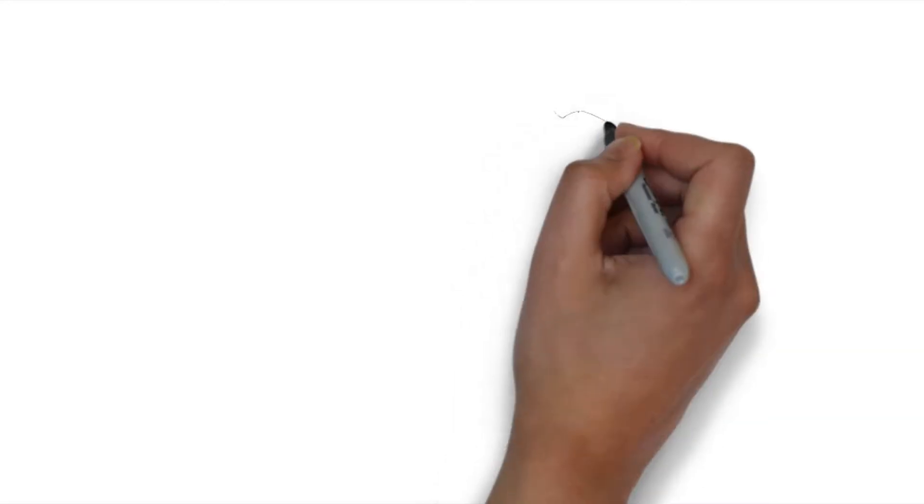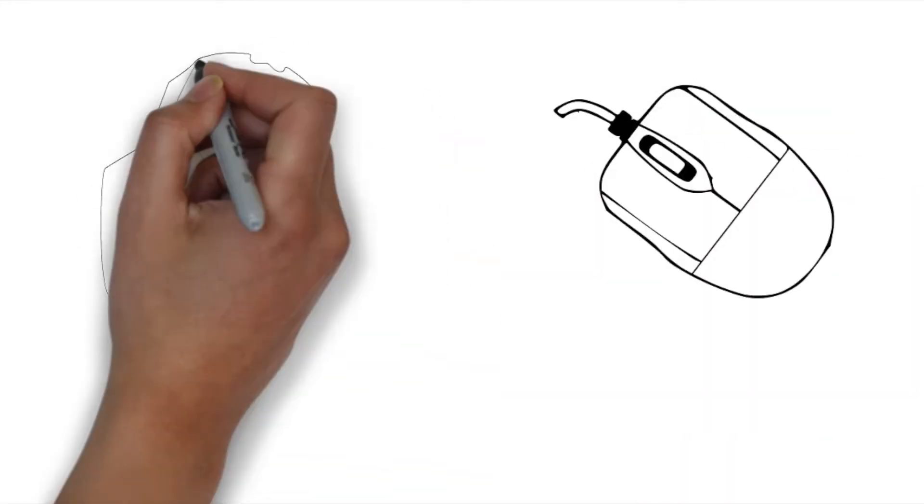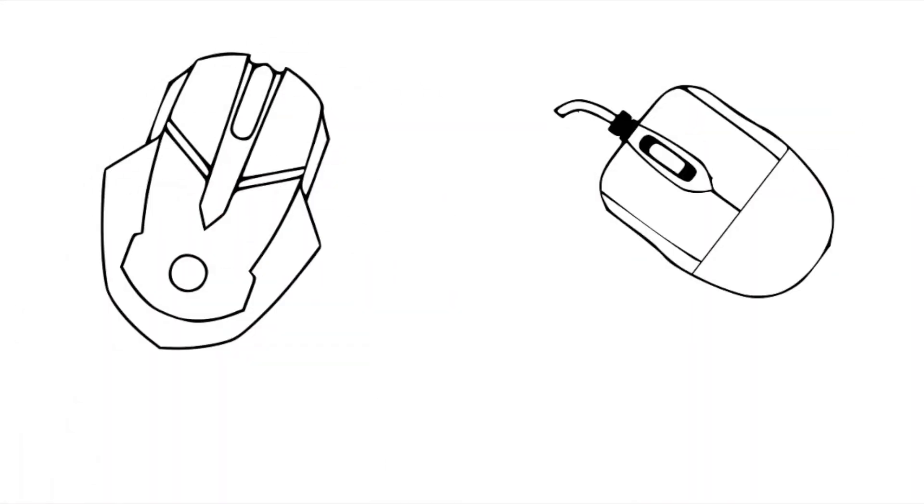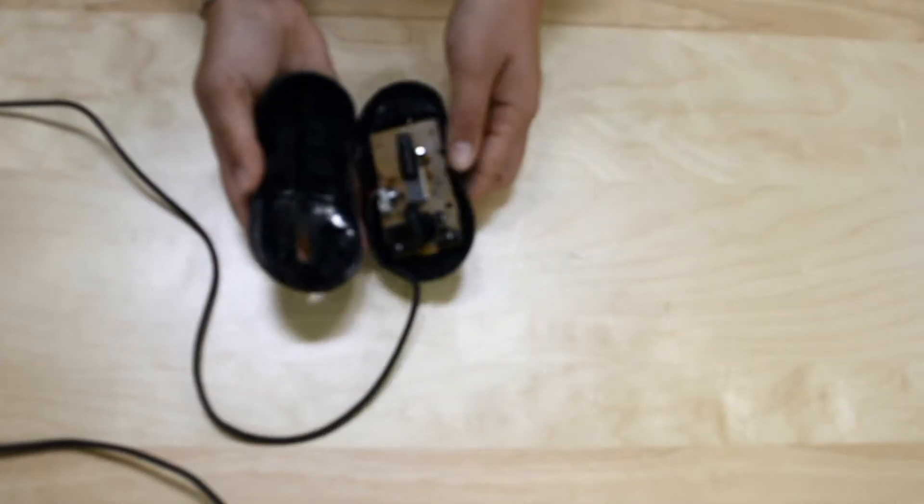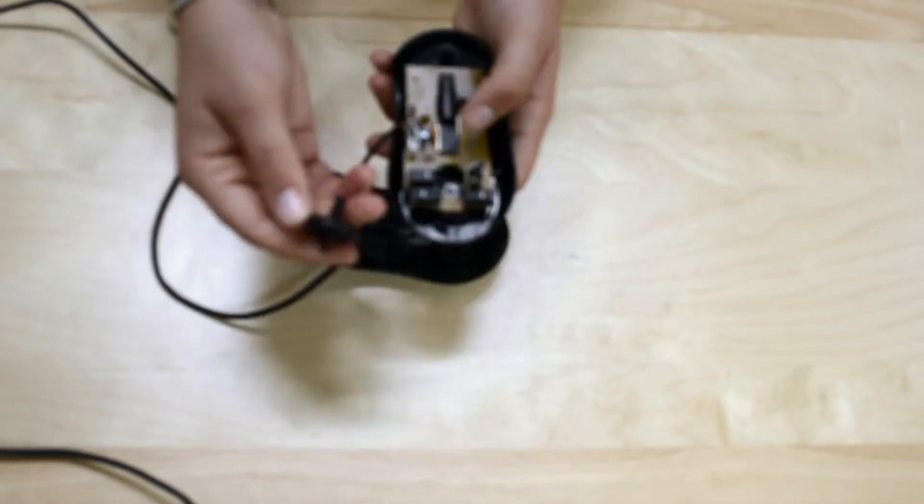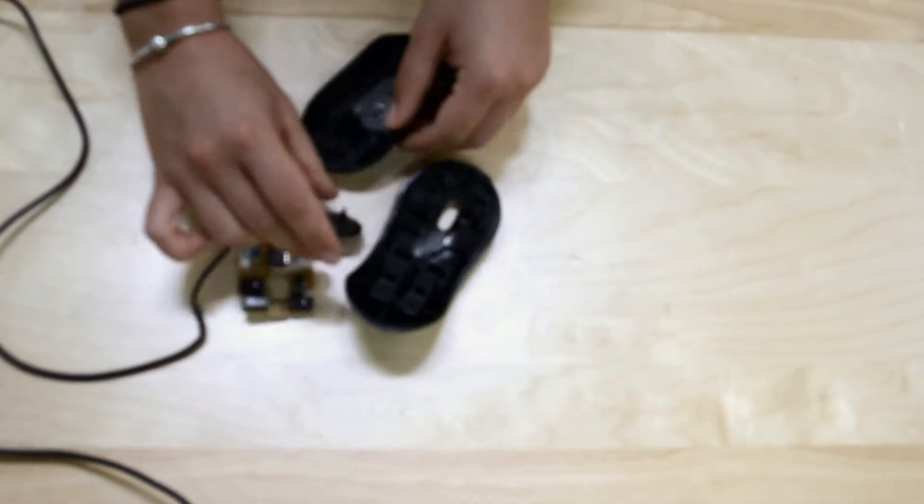So if we're thinking about a computer mouse, usually the first thing that comes to mind is the shape or the form of the mouse, the absence or presence of buttons in the device. But what we really need to think about as engineers is how is the thing working? What's causing those buttons to actually transmit those signals to the machine itself?